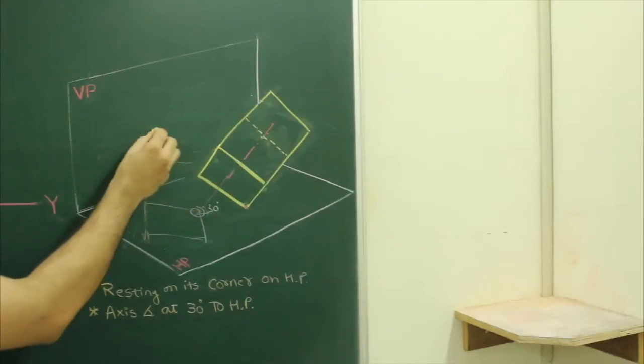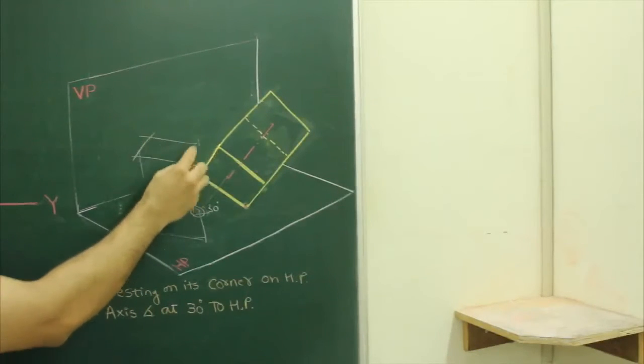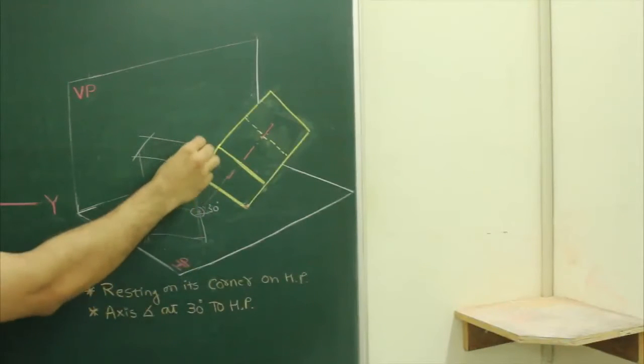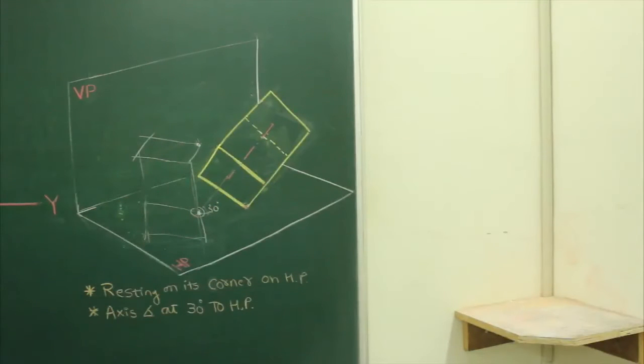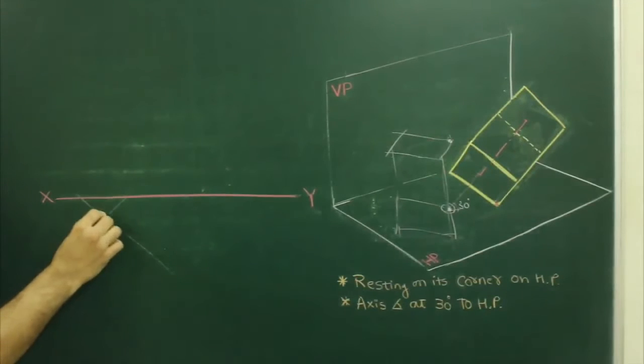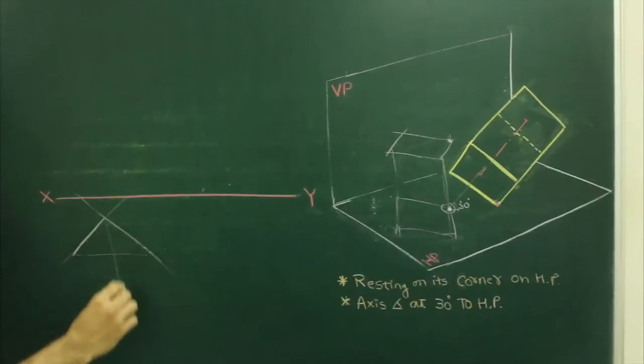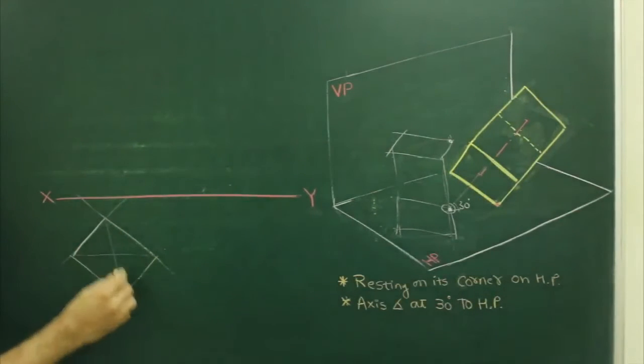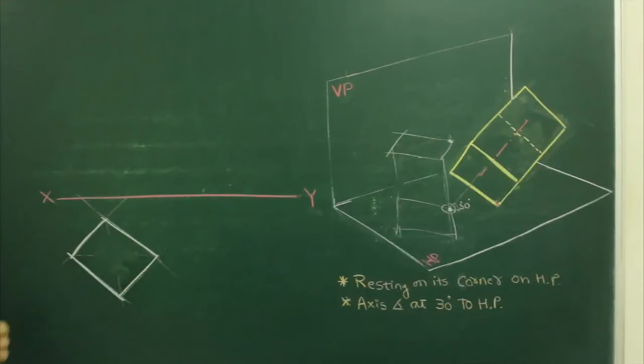When we draw, we will draw the square prism when it is resting on one of its corners. First we will draw 45-45, first we will draw the square, then we will draw the frame field.